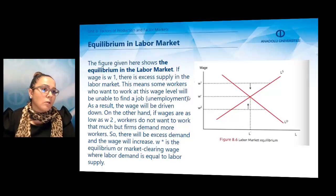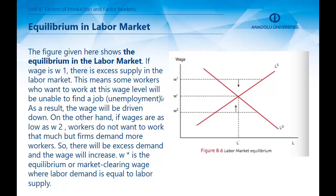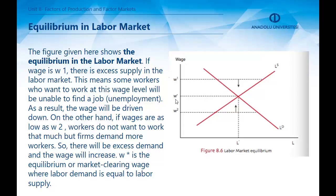When talking about equilibrium in the labour market, the given figure shows that if the wage is at wage one, there is excess supply — some workers who want to work at this wage level will be unable to find a job, which may cause unemployment, and wages will be driven down. If wages are as low as wage two, workers do not want to work that much but firms demand more workers, so there will be excess demand and wages will increase. The equilibrium or market clearing wage is where labour demand equals labour supply.